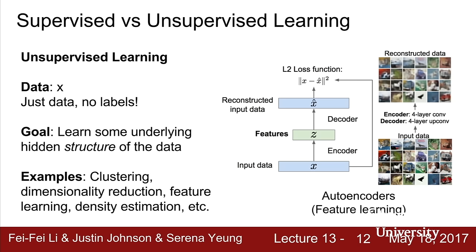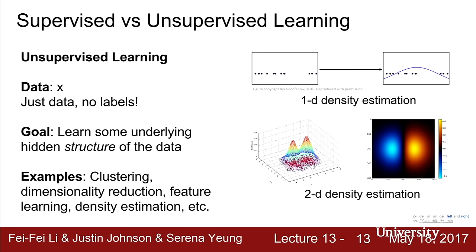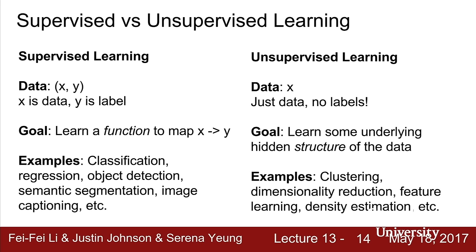We're learning a feature representation without using any additional external labels. Another example is density estimation, where we want to estimate the underlying distribution of our data. For example, in 1D we can fit a Gaussian to the density, and in 2D we model the density such that it is higher where there are more points concentrated. To summarize: in supervised learning we use labeled data to learn a function mapping from X to Y; in unsupervised learning we use no labels and instead try to learn hidden structure—whether groupings, axes of variation, or underlying density.